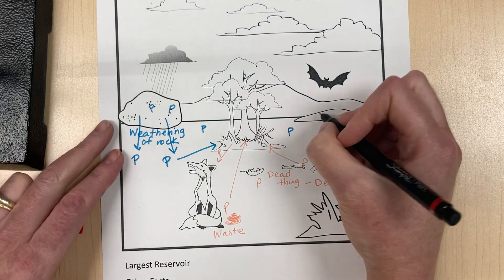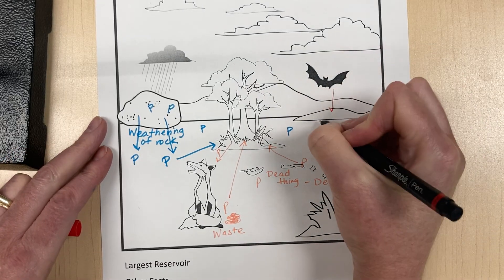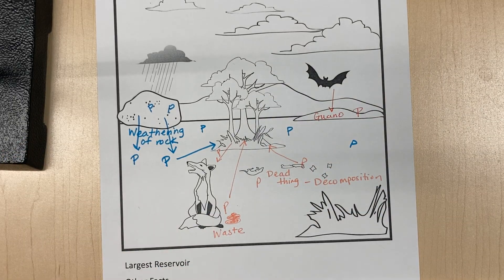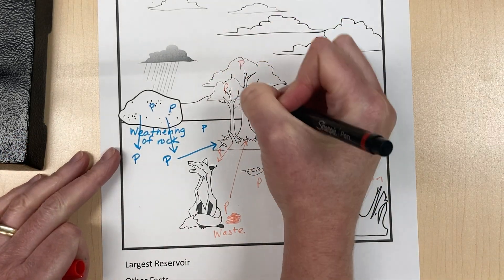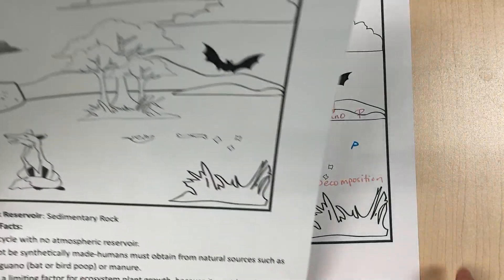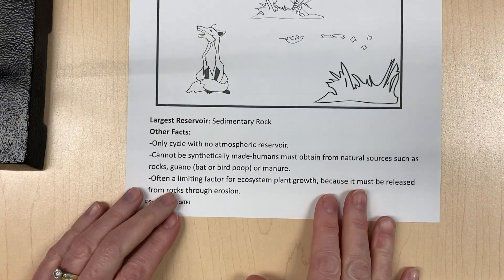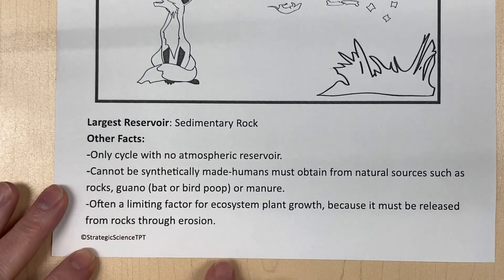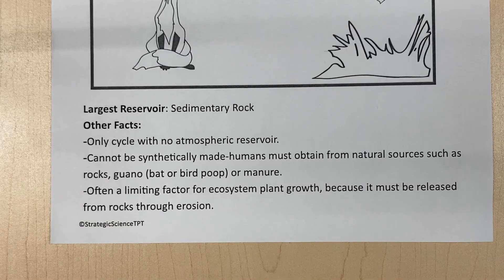Some other sources of phosphorus include bat guano — bat poop is very high in phosphorus, so a lot of fertilizer companies get their phosphorus from guano in bat caves. Plants use phosphorus, and we get phosphorus from eating plants. Those are the basic parts of the phosphorus cycle. You need to know the largest reservoir is sedimentary rock, along with some other key information about phosphorus.